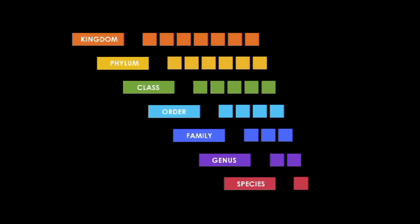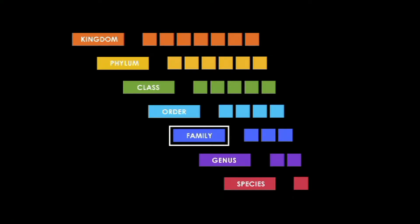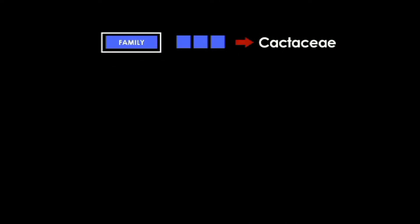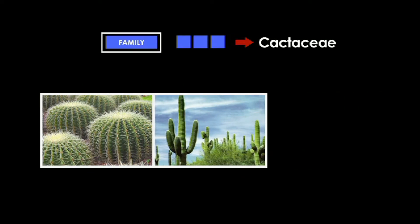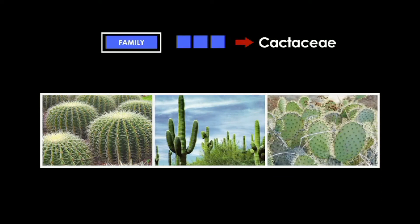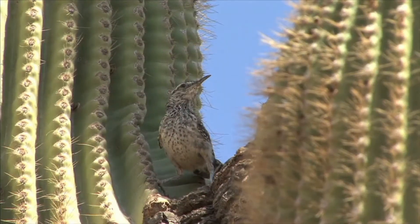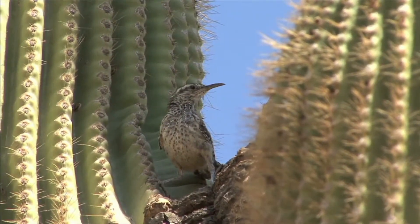Family is the fifth category in which living things are broken down even further. A family of plants, known as cactaceae, includes a variety of cactus. All organisms within the same family share similar characteristics. Cactus plants have spines that are sharp, and they also have stems that have adapted to store water.